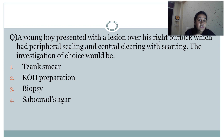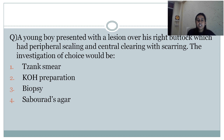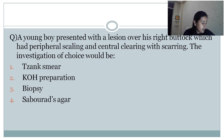Wherever the word 'scarring' comes, it should click in your mind that they are asking a question from skin tuberculosis. Here is an example: a young boy presented with a lesion over his right buttock which had peripheral scaling and central clearing with scarring. The investigation of choice: option one is Ziehl-Neelsen smear, second is KOH preparation, third is biopsy, and fourth is Sabouraud's agar. What is the answer?